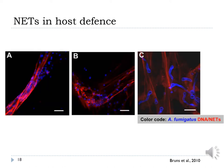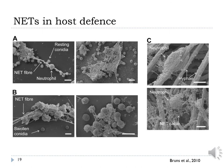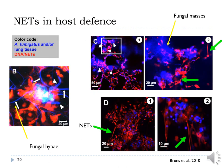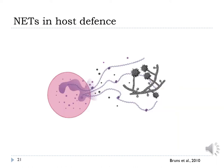Aspergillus fumigatus is the most important airborne fungal pathogen causing life-threatening infections in immunocompromised patients. Browns and colleagues showed that human neutrophils produced NETs in vitro when encountering A. fumigatus. Scanning electron microscopy further revealed the intimate contact between neutrophils and the three morphotypes of the fungus. Using a mouse model, they also demonstrated the existence of NET formation in vivo by microscopy of Aspergillus-infected lungs. This data exemplifies the participation of NETs in the immune response to fungal infections.